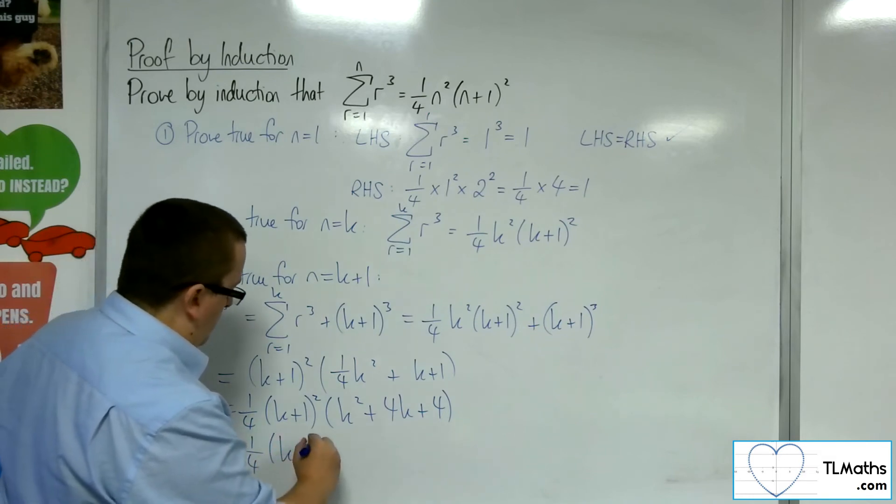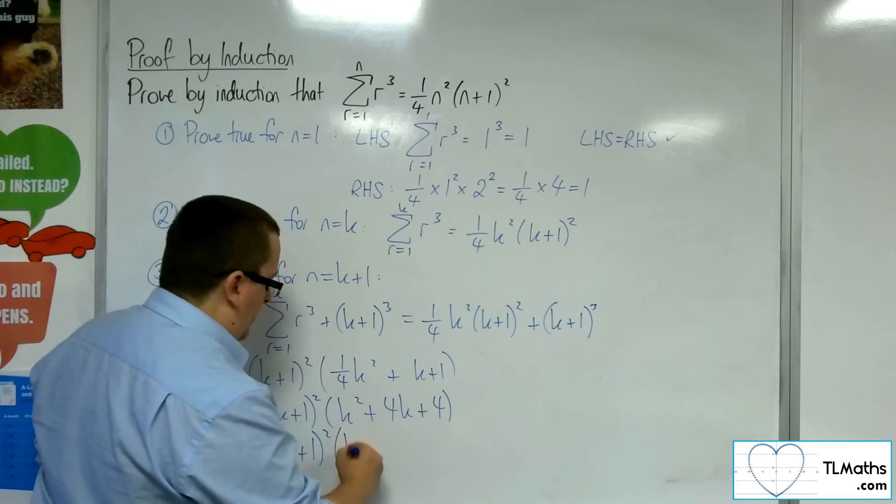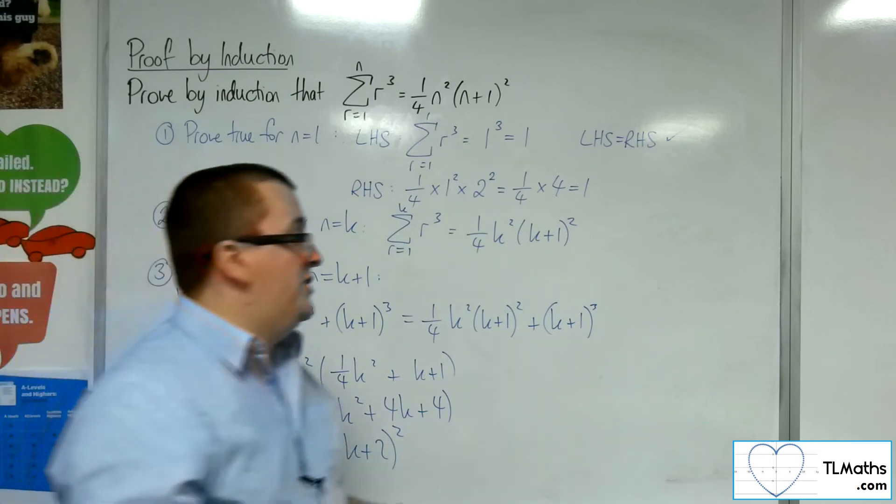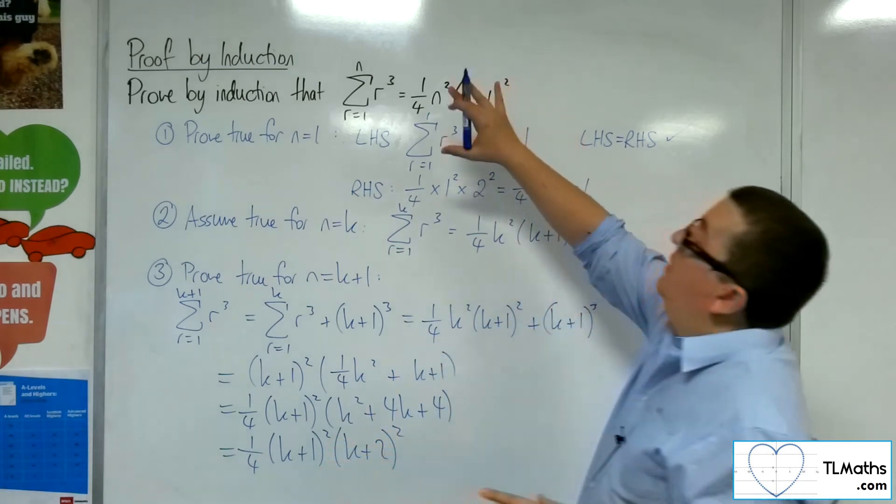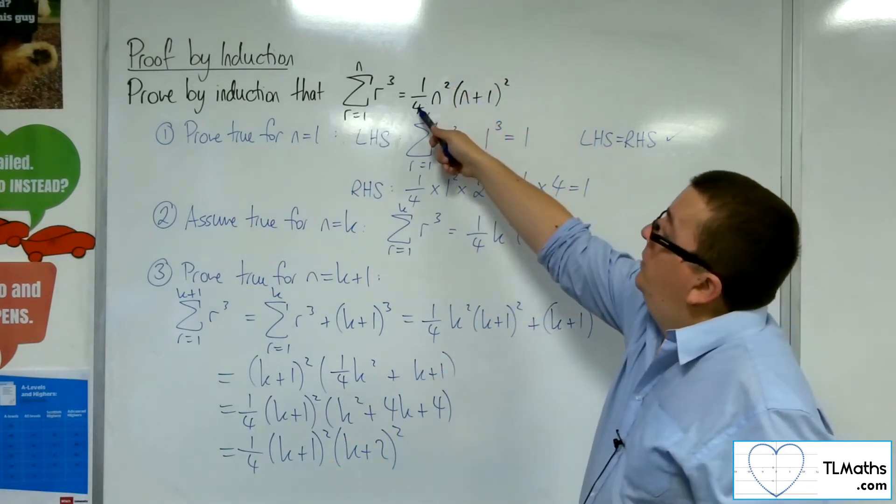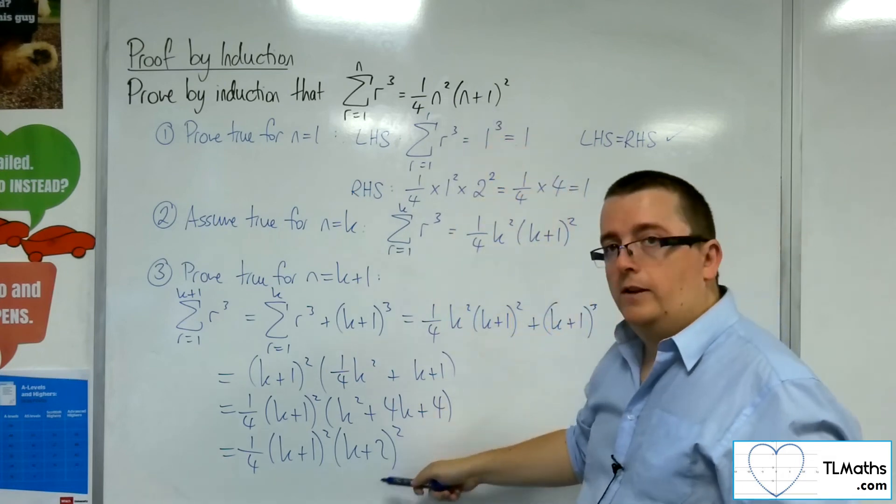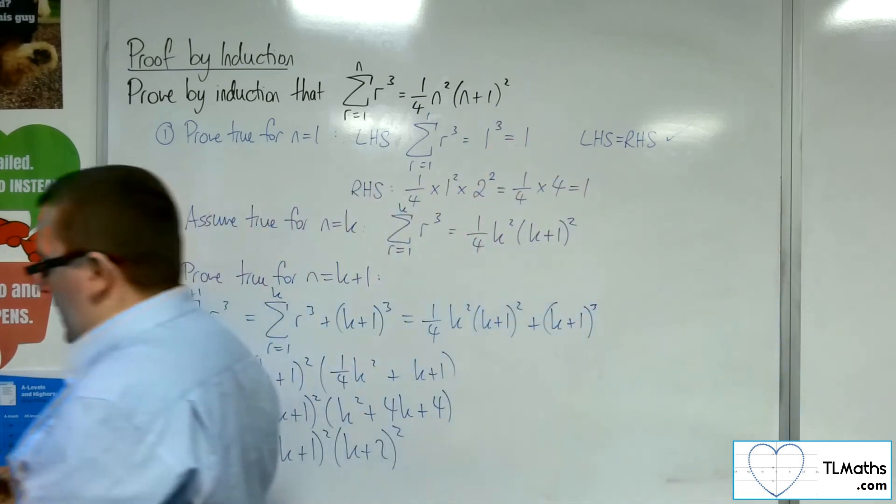Now, this bracket here factorises to k plus 2 squared. And I've arrived at precisely what I thought I should arrive at. 1 quarter, k plus 1 squared, k plus 2 squared. And so I've proved it for n equals k plus 1.